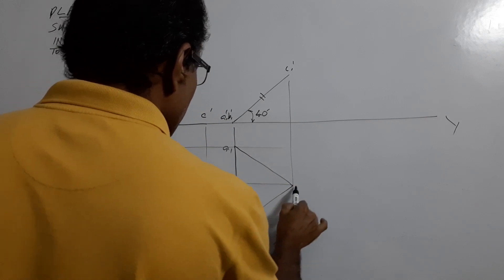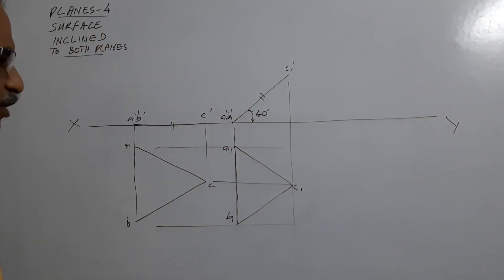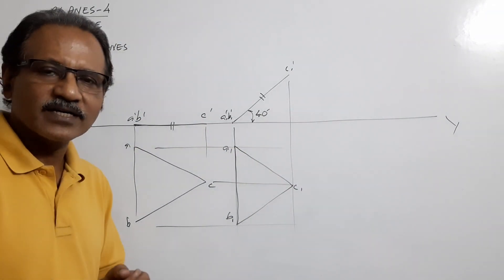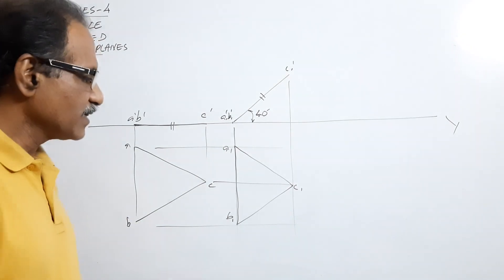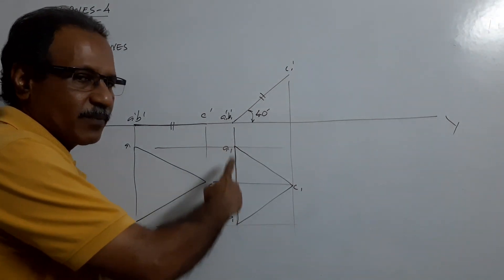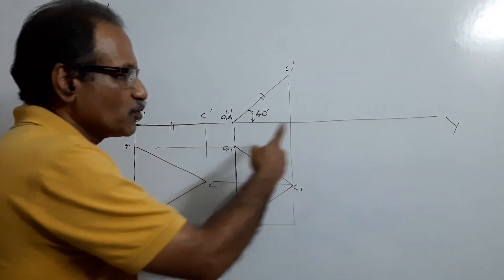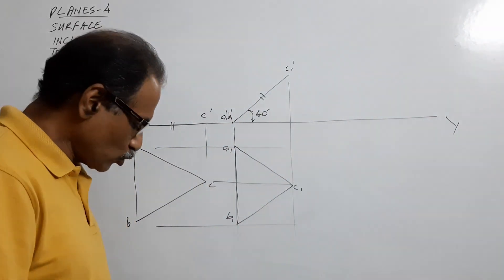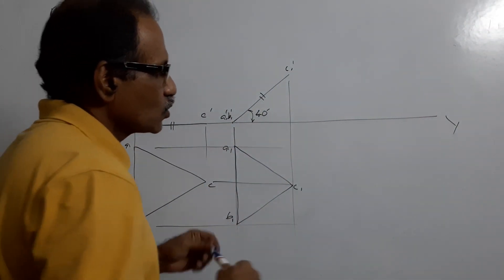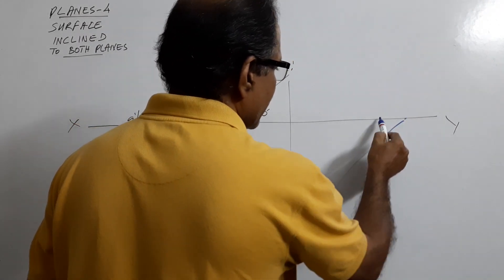You get A1, B1, C1. Now you have to redraw this plan. When you redraw this plan, the condition to be brought in is that side A1B1, which is currently perpendicular to the XY line, has to make 30 degrees to the XY line. To do that, take any point on the XY line and draw a 30 degree line.